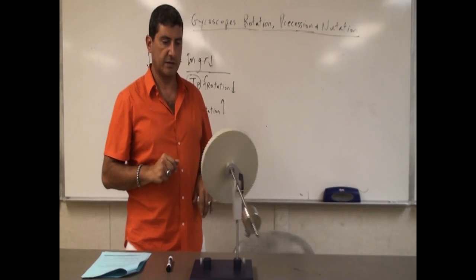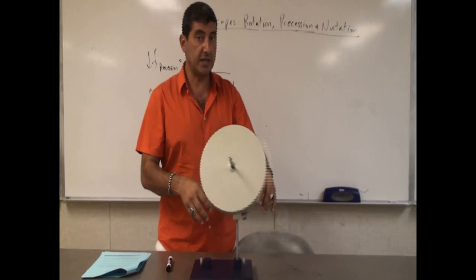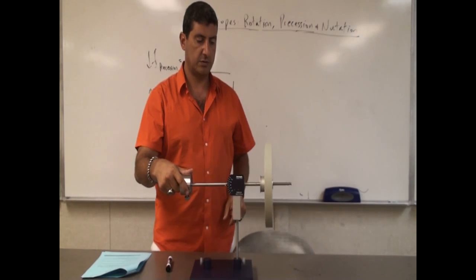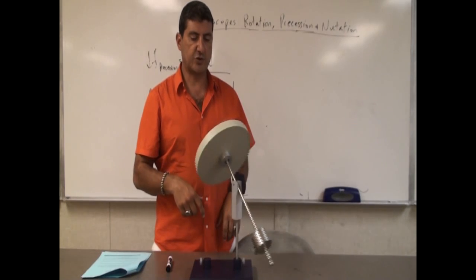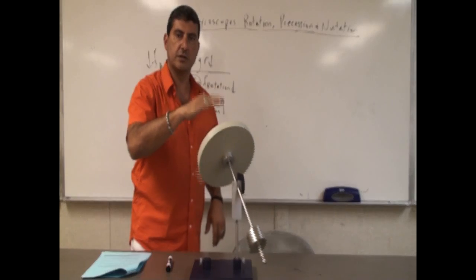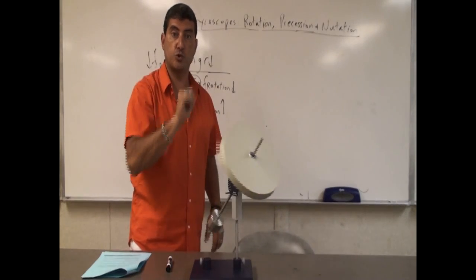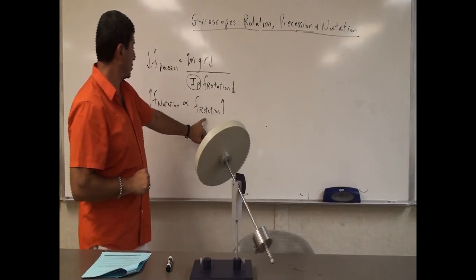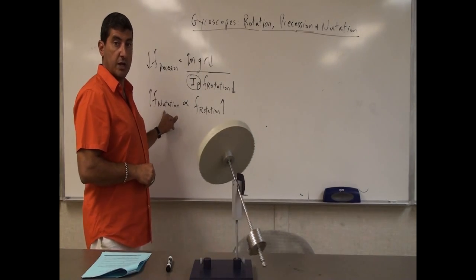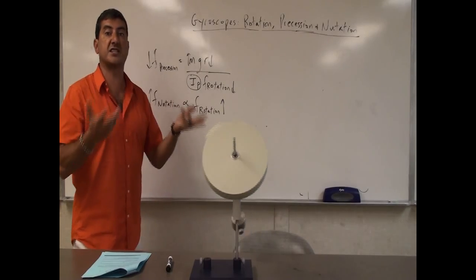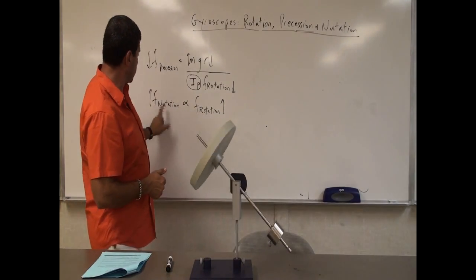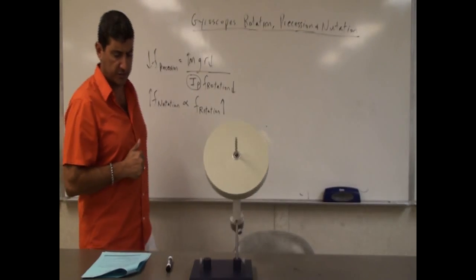It's going up and down and it's precessing. So when I did it slowly — when the rotational frequency was slow — it kind of dropped down and the nutation is not that noticeable; it takes a long time. So when the rotational frequency is low, the nutation frequency is low. That means it takes a long time to nutate and it's not noticeable. If the rotational frequency is high, the nutation is going to be high and more noticeable.